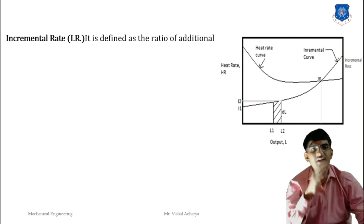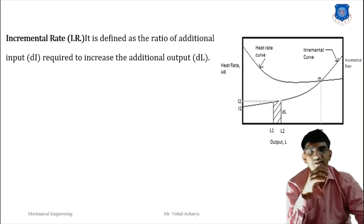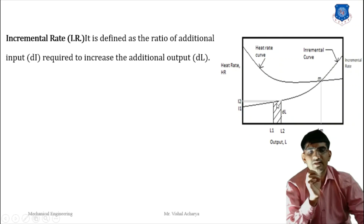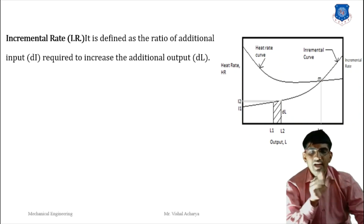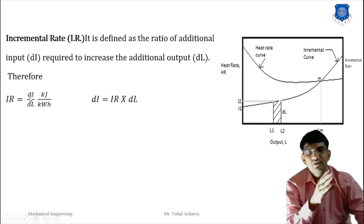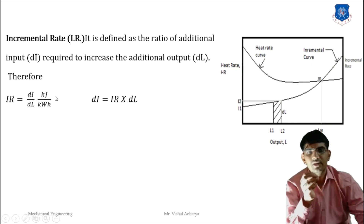Next is the incremental rate. It is defined as the ratio of the additional input required to the additional output obtained. As shown in the figure, additional input yields additional output. For small parameters the relationship is approximately linear, but as parameters increase the curve becomes non-linear. This non-linear curve is called the incremental rate curve. The incremental rate = additional input / additional output, with input in kilojoules and output in kilowatt-hours.